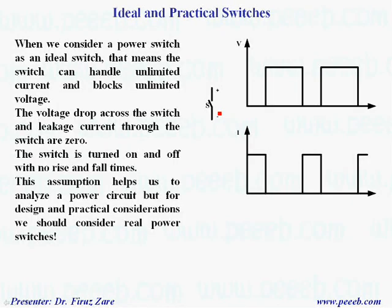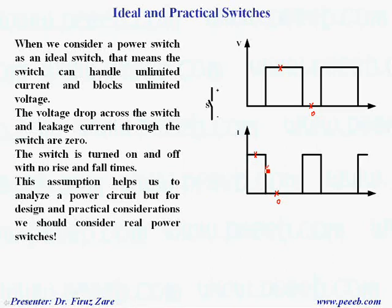When we consider a power switch as an ideal switch, that means the switch can handle unlimited current and block unlimited voltage. The voltage drop across the switch and leakage current through the switch are zero. The switch turns on and off with no rise and fall times. This assumption helps us to analyze the power circuit, but for design and practical consideration, we should consider real power switches.